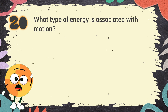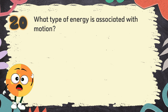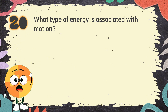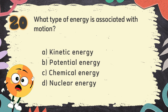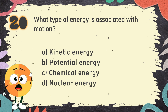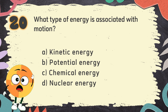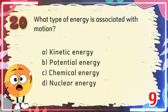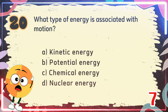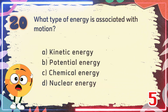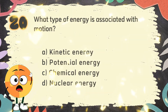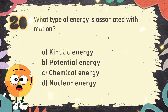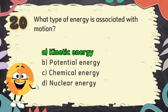Number 20. What type of energy is associated with motion? The choices are: A. Kinetic energy, B. Potential energy, C. Chemical energy, D. Nuclear energy. The correct answer is A. Kinetic energy.